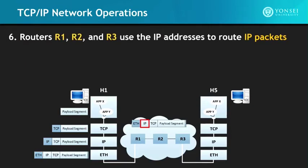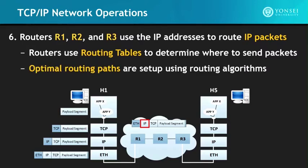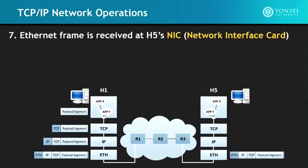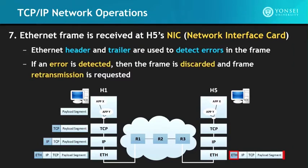The intermediate routers R1, R2, and R3 use the IP addresses to route IP packets. Routers use routing tables to determine where to send the packets, and optimal routing paths are set up using routing algorithms. Then the Ethernet frame is received at H5's network interface card (NIC). The Ethernet header and trailer are used to detect errors in the frame — if an error is detected, the frame is discarded and frame retransmission is requested.